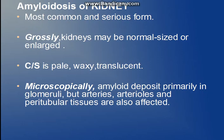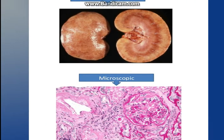Now going to amyloidosis of the kidney. This is the most commonly involved organ and is serious because the patient suffers from nephrotic syndrome. Grossly, in earlier stages the kidneys may be normal in size, whereas they will be enlarged in the later stages. On cut section it will be pale, waxy, and translucent. On microscopy, amyloid deposits primarily in the glomeruli.